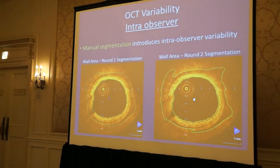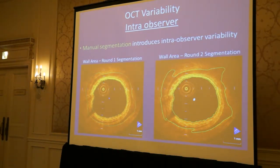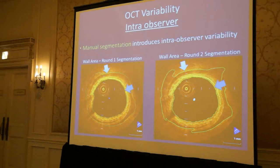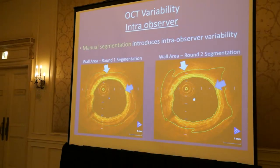Both of these images are of the same airway, and manual segmentation is what introduces intra-observer variability to this technique. The segmented inner airway walls are segmented pretty identically, while the outer airway walls are distinctly different, which would overall produce a distinctly different wall area percent measurement between the two airways.